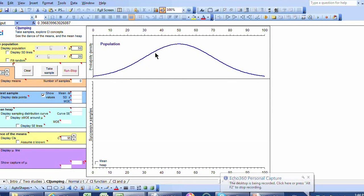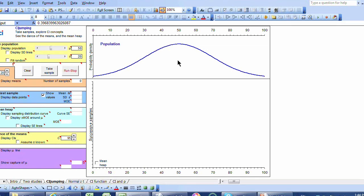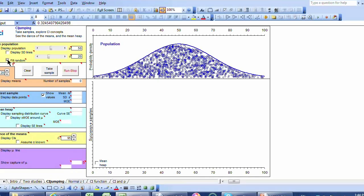Here I've got the population again of, let's say, the pain ratings with a mean of 50, a standard deviation of 20, and that's a, let's assume, an infinite normal population. And so here approaching an infinite number of dots.